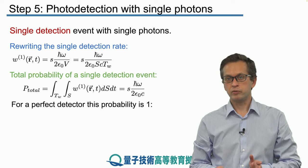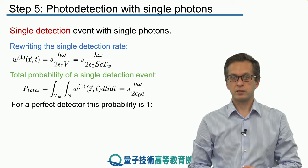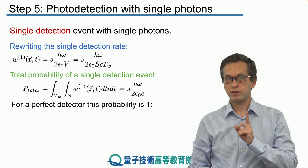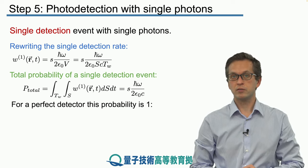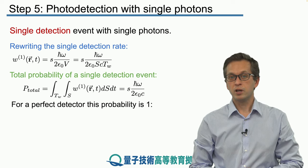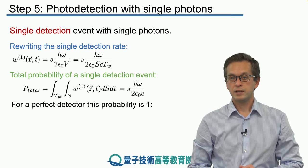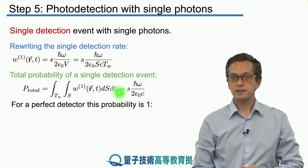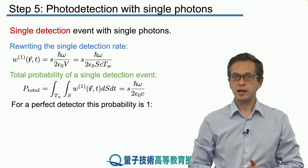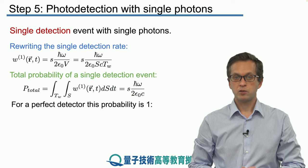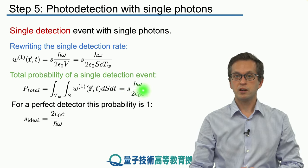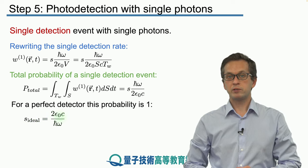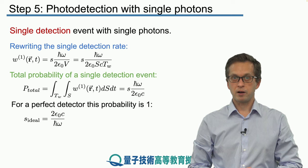And we know that for a perfect detector that we should always detect a single detection event if we have a single photon in our field. Therefore, the p total should be equal to 1. This allows us to write down an expression for this s for the sensitivity of an ideal detector. So all we do is we invert our expression here and we write that s ideal is 2 times ε0 times c divided by ℏ times ω.